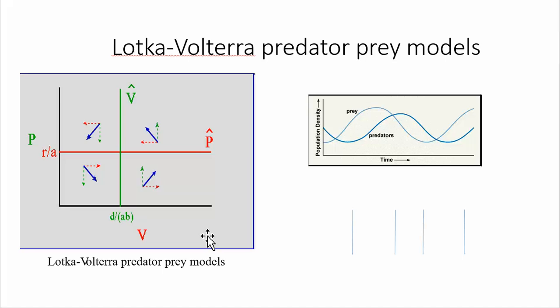And so what emerges from this is this idea that you can have predator-prey cycles. And so the green arrows in the center of this diagram represent changes in predator density from one time step to the next.